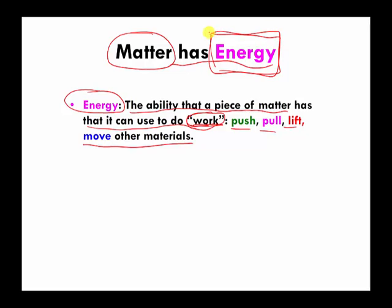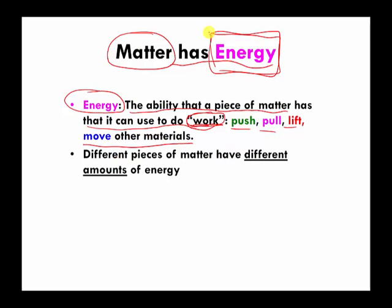Again, this is a very informal definition. You're not going to find it in a very technical science book or even in Wikipedia, but it's reasonably accurate. The other punchline that I want you to realize is that different pieces of material, different pieces of matter, have different amounts of energy. So the idea is that some materials have a lot of energy, some not so much. Depends on the material, depends on what it's made of, depends on how fast the material is moving around, and I'll give you some examples.